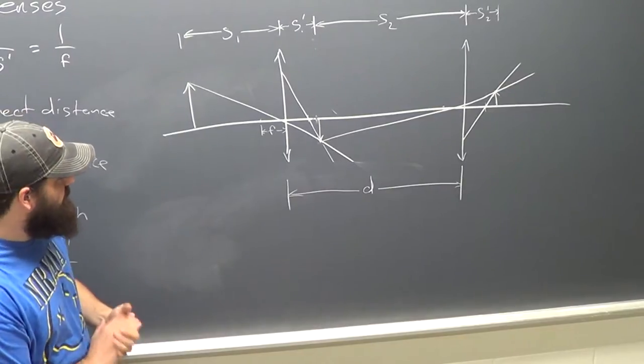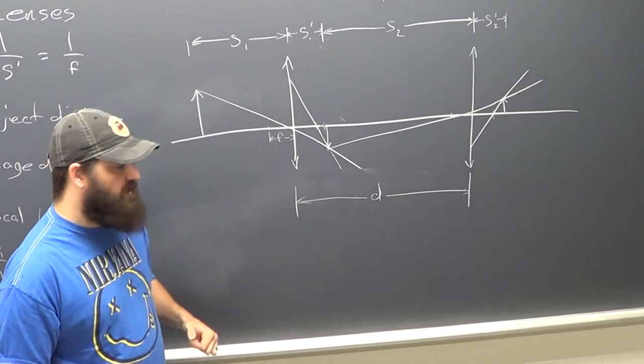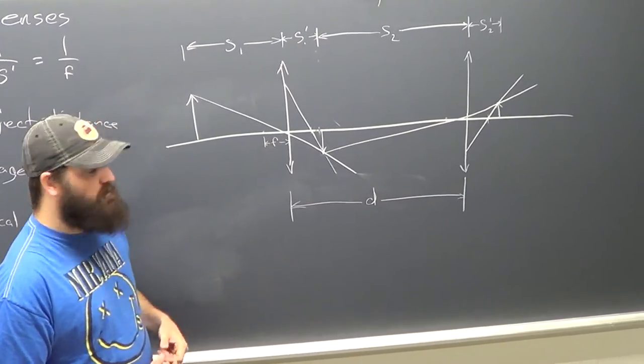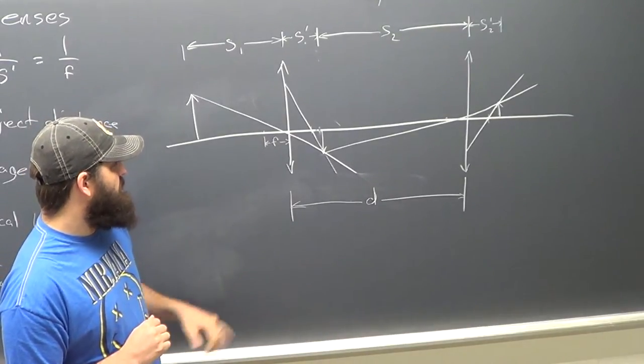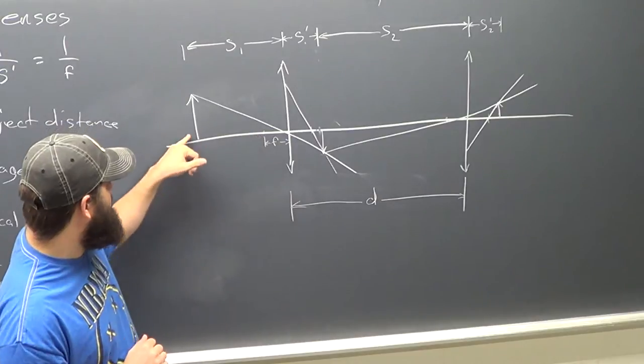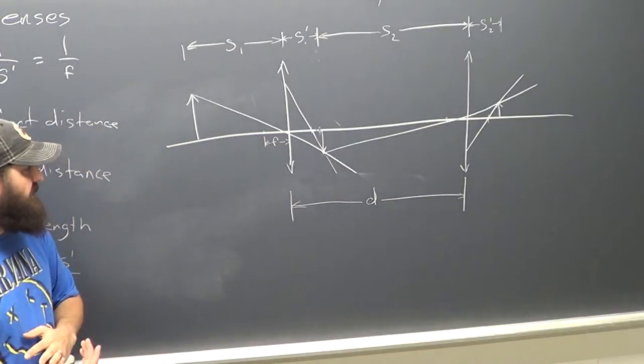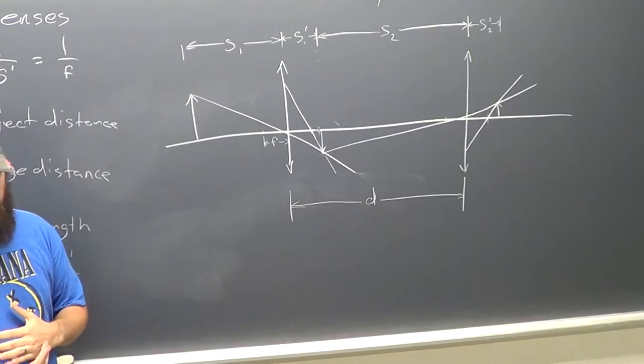For a single lens, this image is always going to be upside down and it will always be smaller than the object. You should also note that the object needs to be outside of the focal length in order to get an image at all.